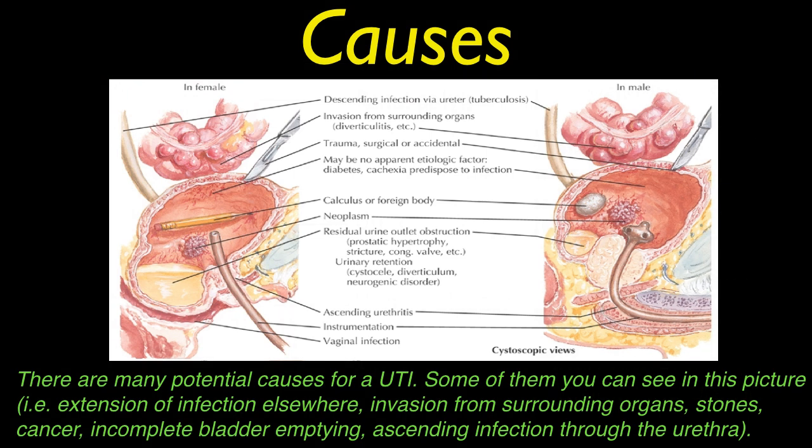Causes. There are potential causes of a UTI shown in this picture. Some of them you can see clearly, like extension of infection elsewhere, invasion from surrounding organs, stones, cancer, incomplete bladder emptying, and ascending infection through the urethra.